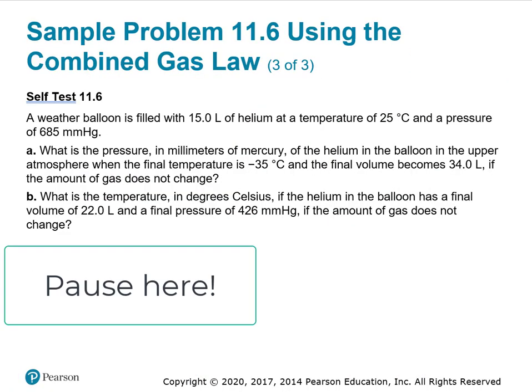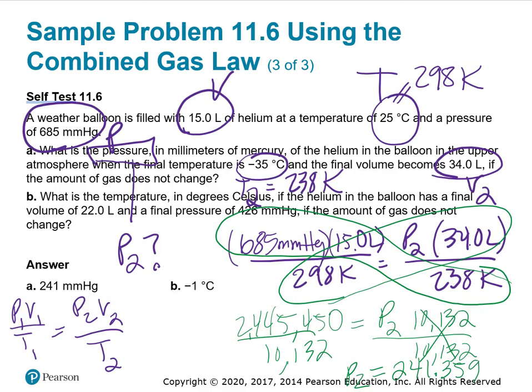This is our next practice problem, so pause the video here and try to work through it. We're told we have a weather balloon filled with 15 liters of helium, that's a volume, at a temperature of 25 degrees Celsius, that's a temperature. I made it into Kelvin, added 273, and a pressure of 685 millimeters of mercury. So we're given initial volume, pressure, and temperature.